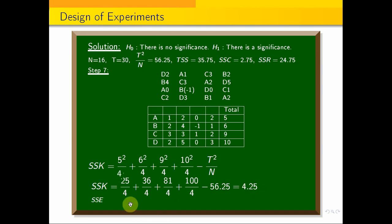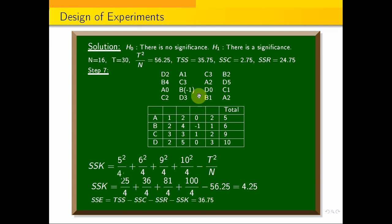The sum of squares of error (SSE) equals TSS minus SSC minus SSR minus SSK. That is: 35.75 minus 2.75 minus 24.75 minus 4.25. SSE equals 4.